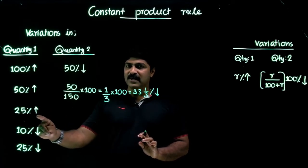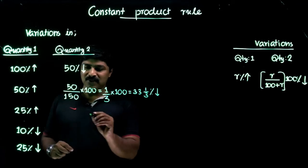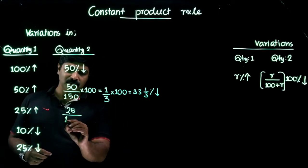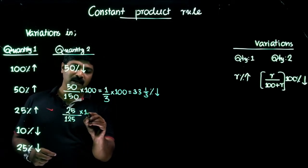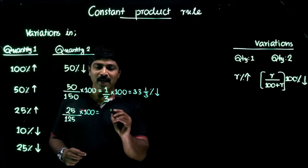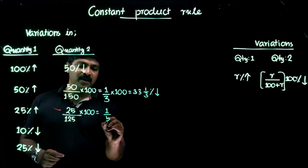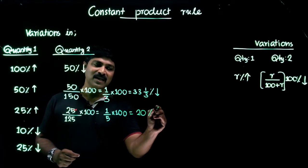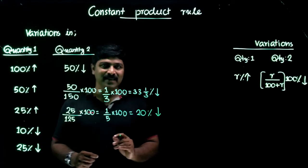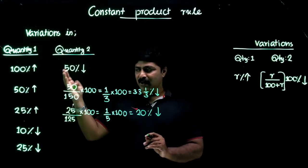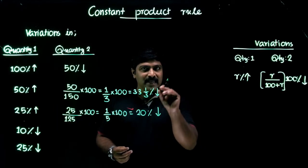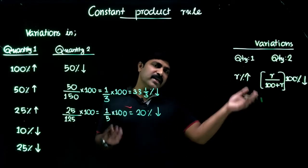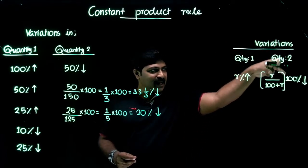Similarly, if the first component is increased by 25 percent, the formula gives: 25 / (100 + 25) = 25 / 125 × 100. Simplifying, 25/125 = 1/5, and 1/5 × 100 = 20 percent. So a 25 percent increase on the first component results in a corresponding decrease of 20 percent on the second component.